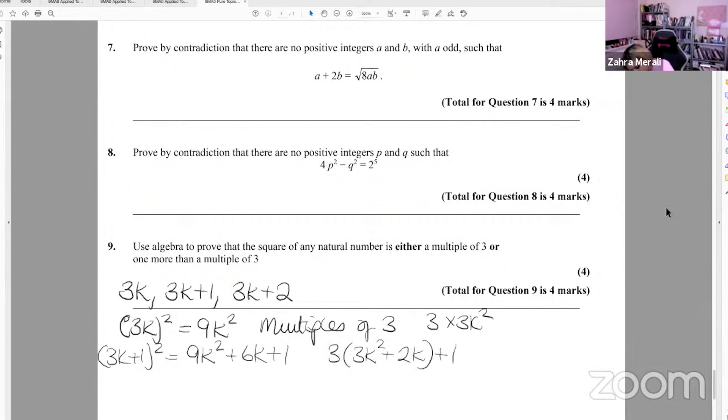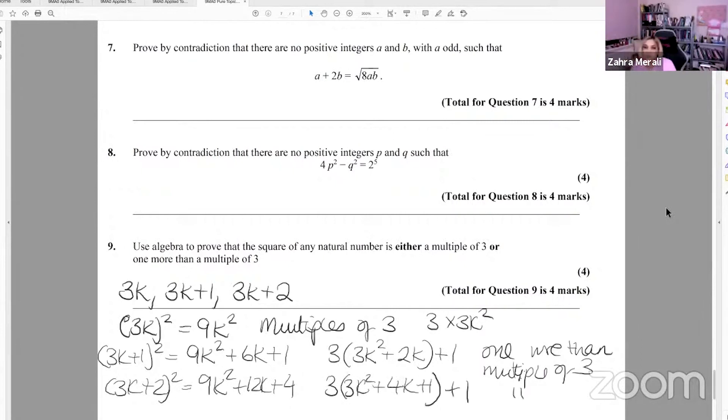And then you've got 3k plus 1 squared, which is 9k squared plus 6k plus 1. So we take 3 outside the bracket. So this is one more than multiple of three. Multiple of three. And then you could take 3k plus 2 squared. Open that out. So you get 9k squared plus 12k plus 4. Take 3 outside the bracket again, 4k plus 1. And then you get plus 1, which is one more than a multiple of three. And then you said you've proved it for every single natural number that you have a multiple of three. Sorry, that's really rushed. It's what? 3:20 in the morning and I'm starting to fall asleep. So this is the last one for tonight.